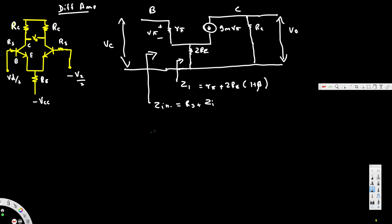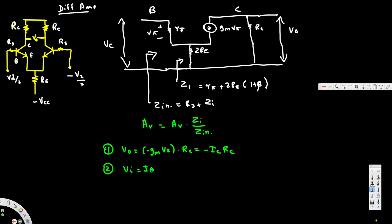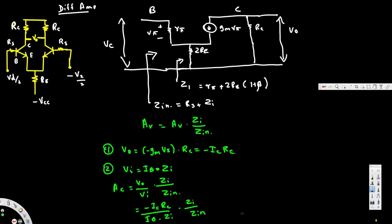The voltage gain Av equals Av times Zi divided by Zin. First, Vo equals negative gm*v5 times Rc, which equals negative Ic*Rc. Second, Vi equals Ib times Zi. Therefore Ac equals (Vo/Vi) times (Zin/Zi), which gives negative Ic*Rc divided by (Ib times Zi), times Zi divided by Zin.